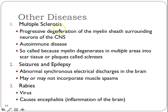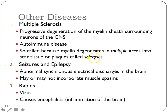Just very quickly, some other diseases relating back to neurons. You may have heard of multiple sclerosis. Basically, the myelin sheath surrounding neurons in the central nervous system starts to degenerate — it's an autoimmune disease where your own immune system attacks the oligodendrocytes producing the myelin sheath. It gets its name because the myelin degenerates in multiple areas into plaques called scleroses. As the myelin sheath degenerates, it affects proper neuron firing, which then affects function in both thought and muscle movements.